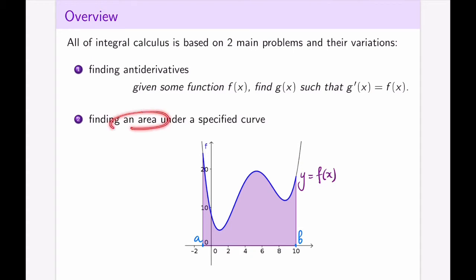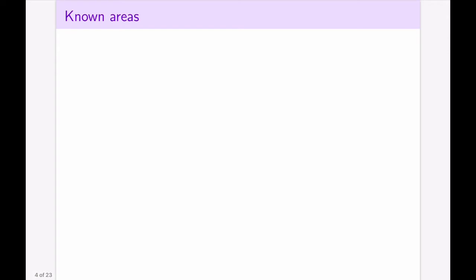Now, if we're going to start looking for areas, let's think about some known areas that we already can compute exactly. Think of what is the simplest shape whose area you know as a formula. This is most likely going to be a rectangle. So if I have a rectangle, I can identify the sides — let's call them a and b, or length and width — and then the formula for the area is a times b.